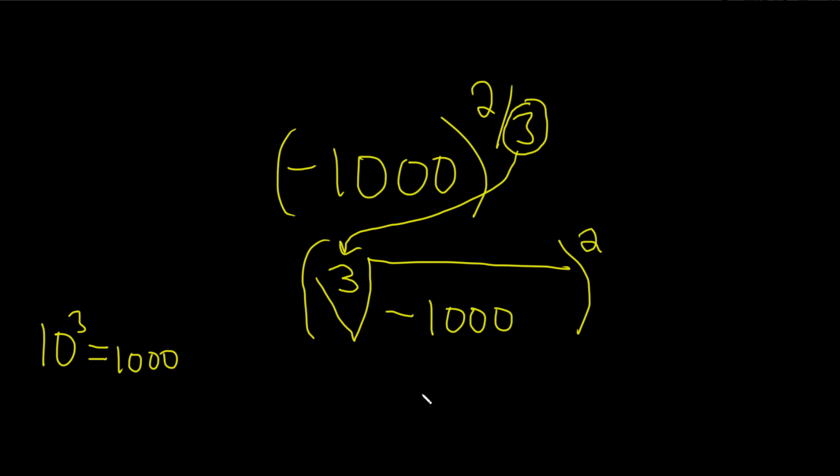Okay, so this will be negative 10, and then this is squared. Why is it negative? Because remember, this is odd, so that means a negative hangs out. And then the cube root of 1,000 is 10. And then when you square something negative, it becomes positive, and then 10 squared is 100, so you're just going to get 100 like that.